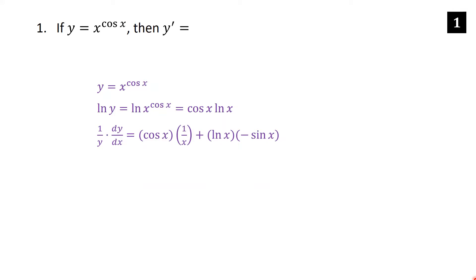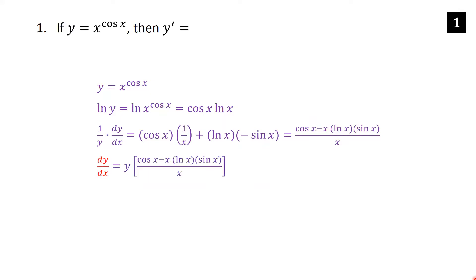Now I'm just going to get a common denominator. x is in the denominator in the first term, so I'm going to multiply the second term by x over x. So we have cosine x over x, and then I pulled the minus sign out front, so we have minus x times ln x times sine x over x.